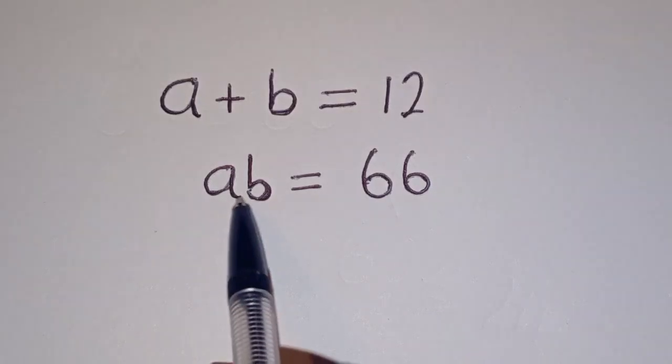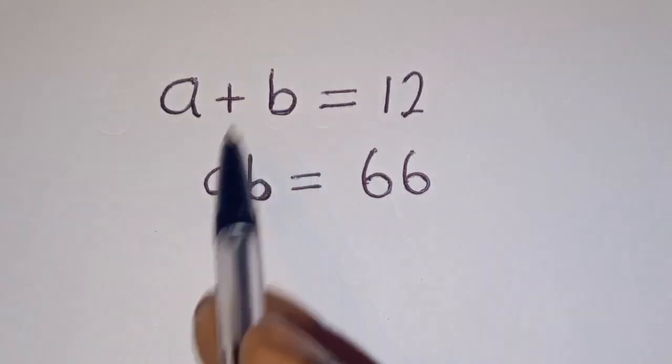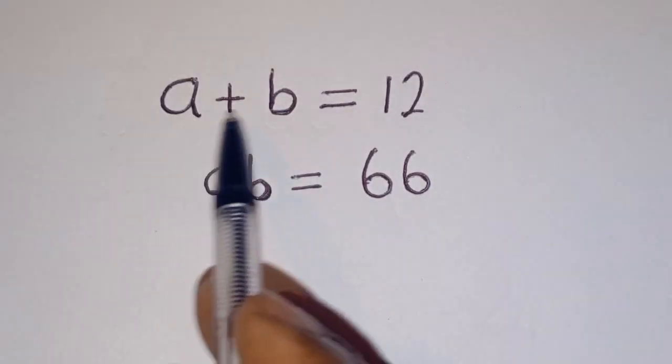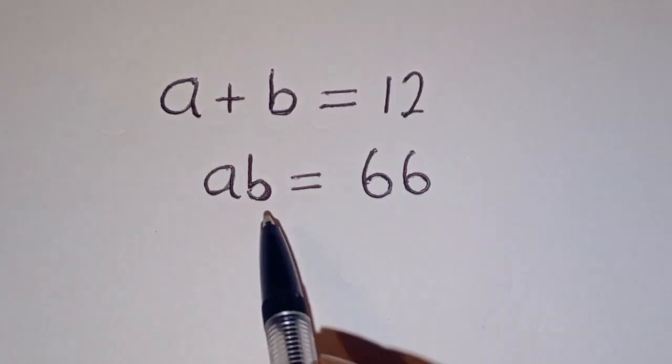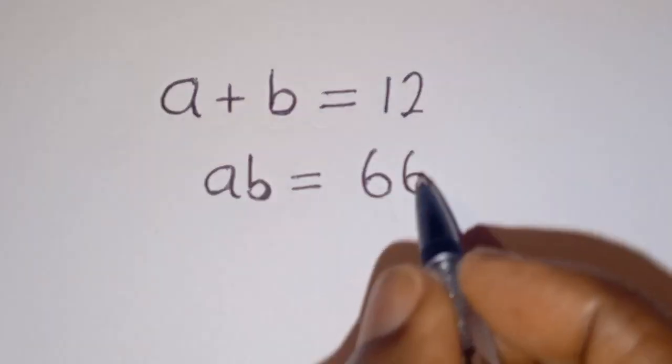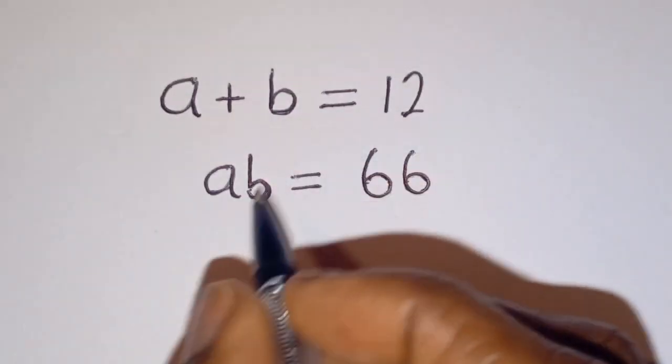Hello, how to solve for A and B in this equation? A plus B is equal to 12. A times B is equal to 66.